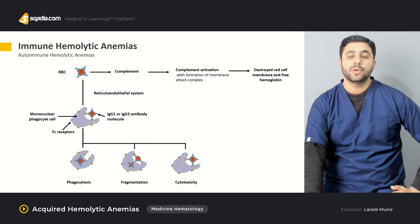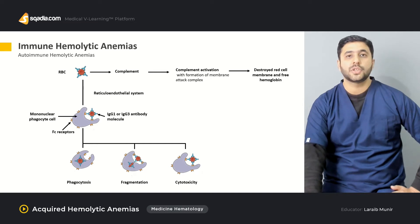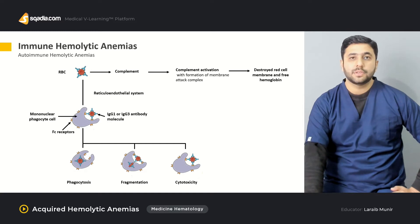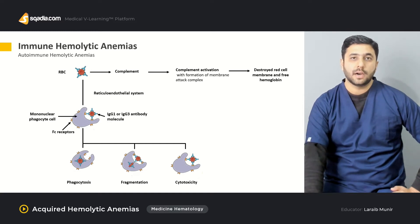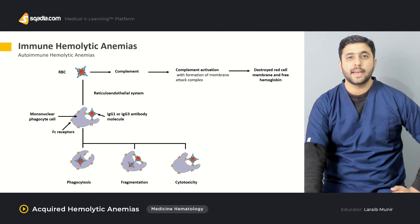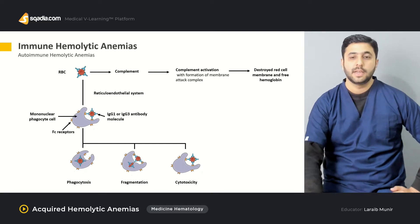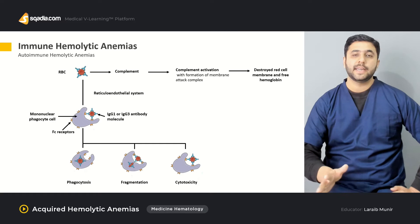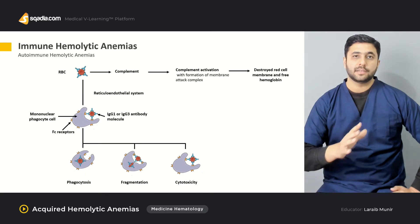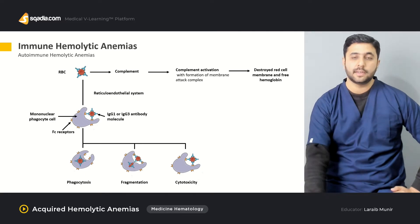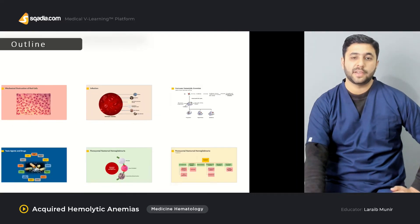Similarly, immune hemolytic anemias are a major chunk of the hemolytic anemias. We will cover how the immune system destroys RBCs, the underlying mechanism of destruction, and whether it is an intravascular or extravascular hemolysis — explained with the help of very neat flow charts and diagrams in a step-wise fashion.